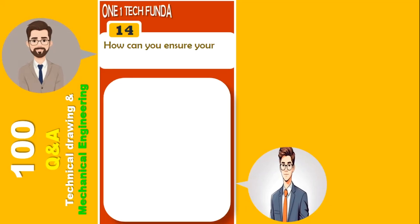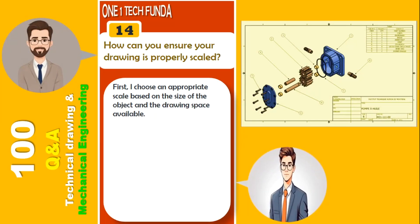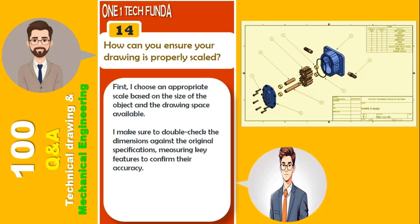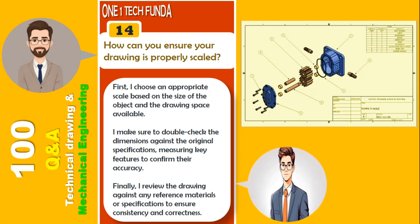How can you ensure your drawing is properly scaled? First, I choose an appropriate scale based on the size of the object and the drawing space available. I make sure to double-check the dimensions against the original specifications, measuring key features to confirm their accuracy. Finally, I review the drawing against any reference materials or specifications to ensure consistency and correctness.